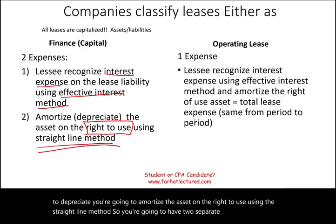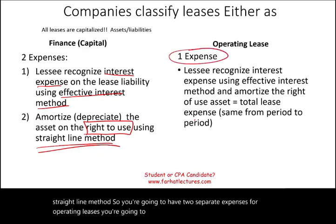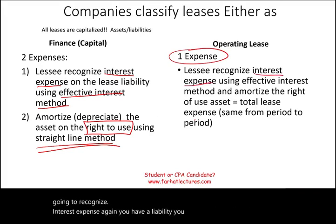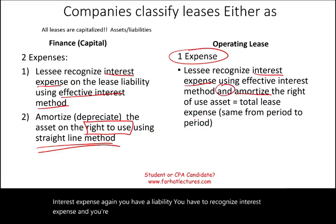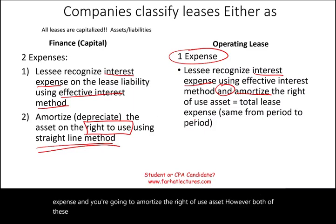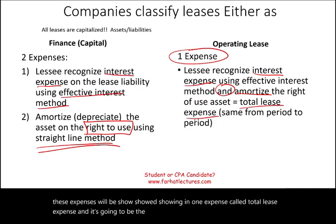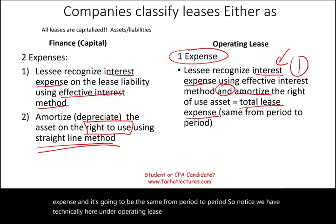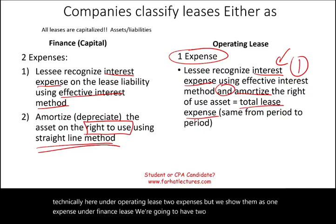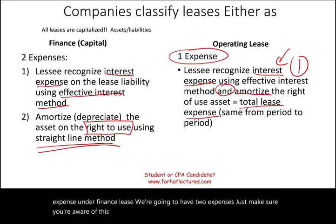For operating leases, you're going to have one expense. You still recognize interest expense — because you have a liability — and you amortize the right-of-use asset, but both of these expenses are shown together as one total lease expense, and it's going to be the same from period to period. Under finance lease we show two expenses; under operating lease we show them as one. Keep this in mind when we work with actual examples.